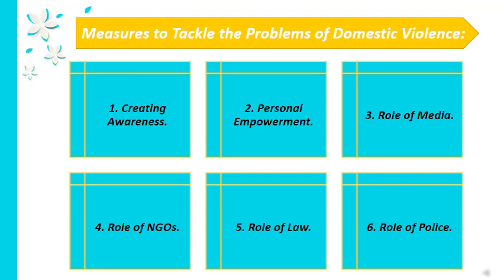The sixth measure is the role of police. It is very important that law-enforcing staff become sensitive to matters pertaining to domestic violence. All too often, the police staff may not be sensitive to handling issues of domestic violence, treating it as a personal matter to be sorted within the confines of one's home. Such mindsets also need to change. Today, there are women police staff especially assigned to handle issues regarding violence towards women.